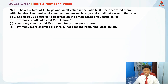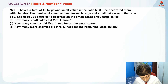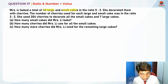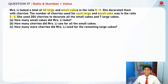Question 17 tests us on ratio and number times value. This question has three parts: Part A, B, and C. Mrs. Lee baked a total of 40 large and small cakes in the ratio of 5 to 3. She decorated them with cherries, and the number of cherries used for each large and small cake was in the ratio of 3 to 2.